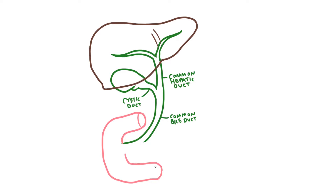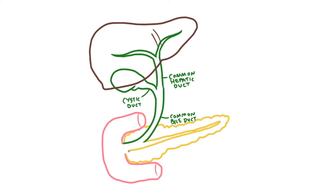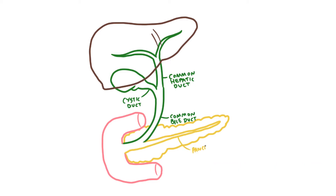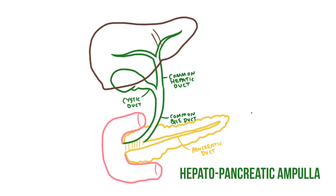As you draw this, make sure to leave this section of the bile duct blank because we need to add one more thing. Inside the loop of the duodenum we'll find the head of the pancreas, with its tail heading off to the left. Inside that we'll find a duct – the creatively titled pancreatic duct – that allows enzymes made by the pancreas to drain into the gut. The pancreatic duct joins our bile duct and forms a single structure known as the hepatopancreatic ampulla.